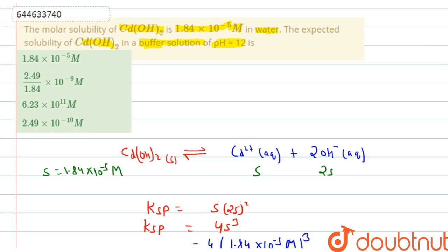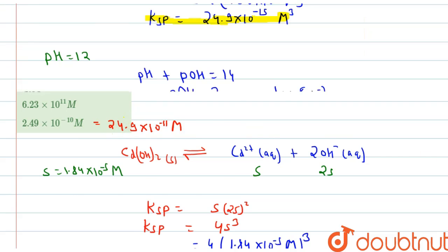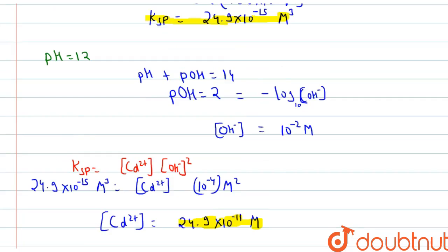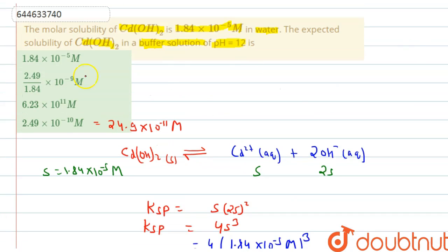Checking the options, the appropriate answer is 2.49×10⁻¹⁰ molar, which is the same as 24.9×10⁻¹¹ molar. So option D is our correct answer.